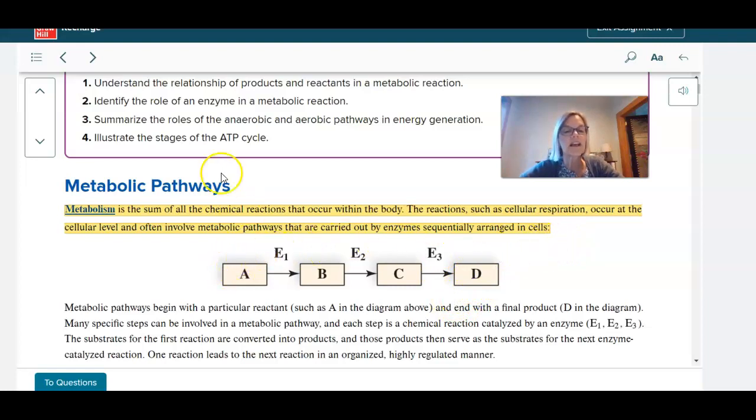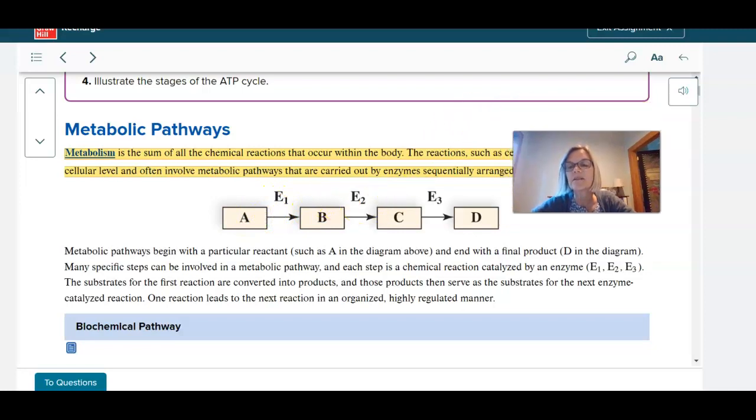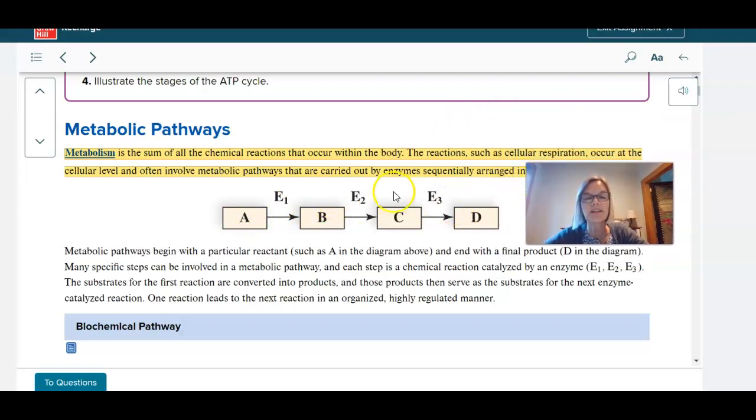Cellular respiration is a metabolic pathway, and what they're trying to show you here is there's some kind of molecule that starts this metabolic pathway and enzyme one works on that molecule. Now hopefully you remember that enzymes are proteins and they're involved in metabolic pathways, involved in metabolism. So we have this molecule that enzyme one works on and it creates a product, and that product becomes what we call the substrate for enzyme two.